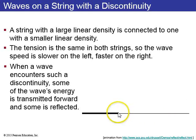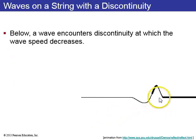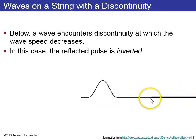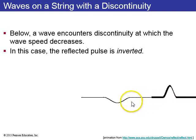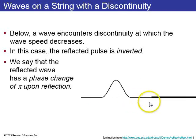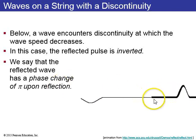But whenever a wave encounters such a discontinuity or change in speed, some of the wave's energy is actually reflected backwards. And that's also true if you start with a lighter string and then go to a heavier string. So here the speed decreases, and there is also some energy reflected, but now the reflected pulse is inverted. And when we have an inverted wave, we say that there's a phase change upon reflection of pi. So it's half of 2 pi, right?